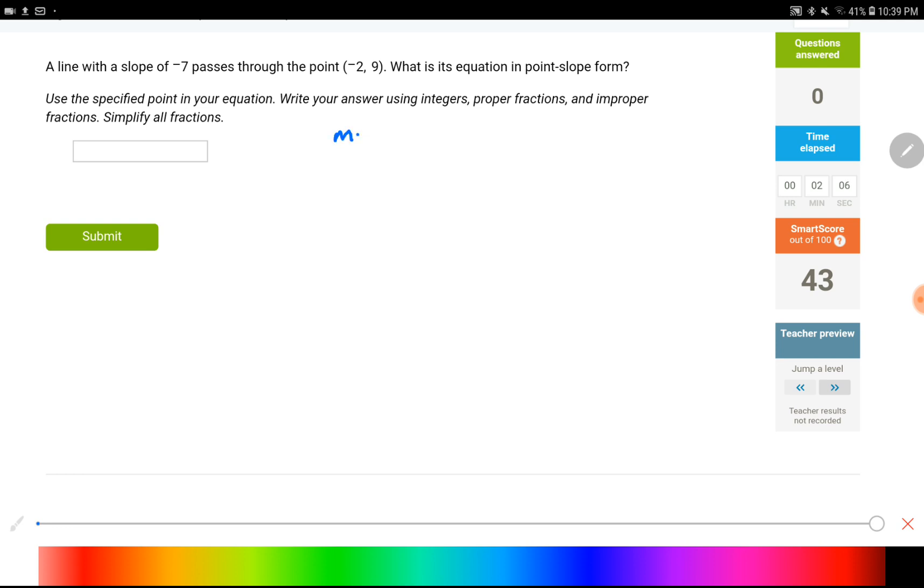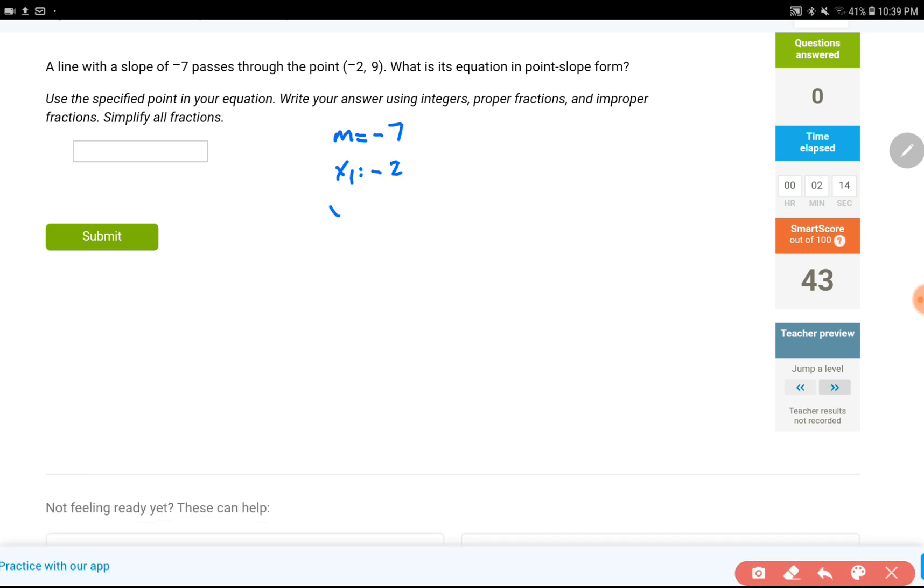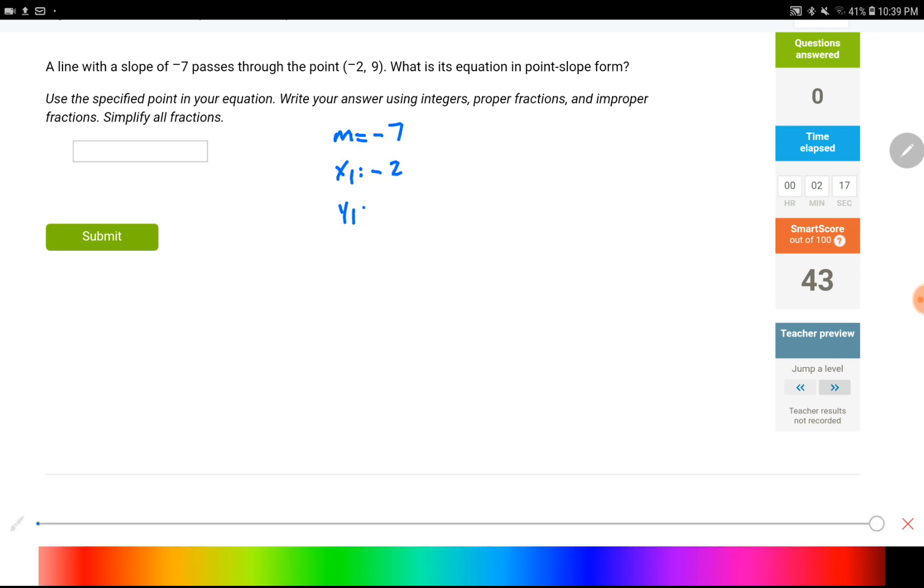Okay, so a slope is given as negative 7, x1 is negative 2, y1 is positive 9. So let's just rewrite the point slope form, y minus y1 equals m times x minus x1.